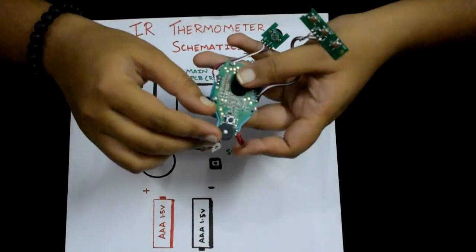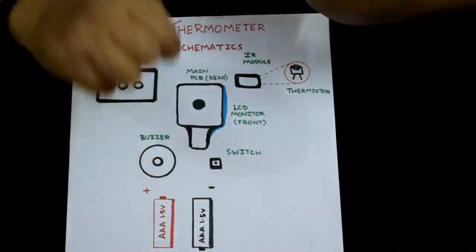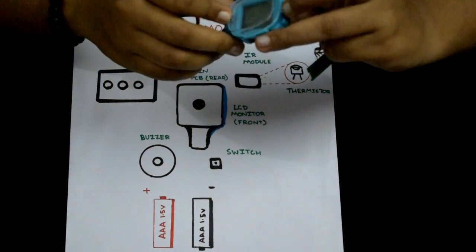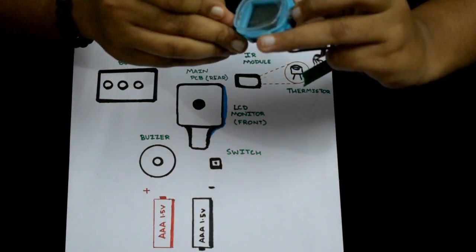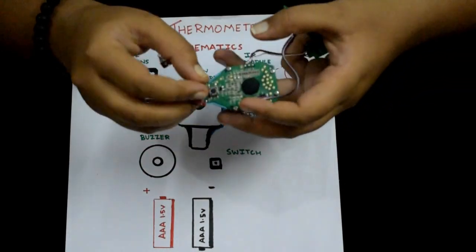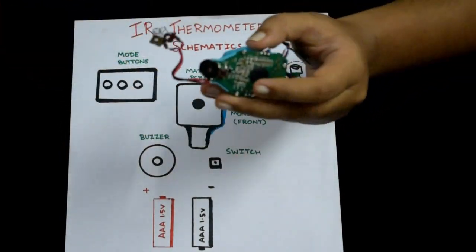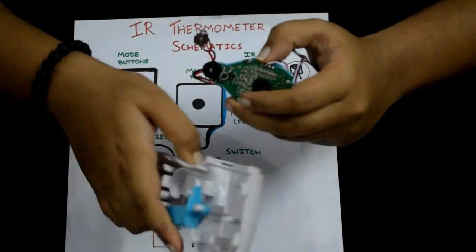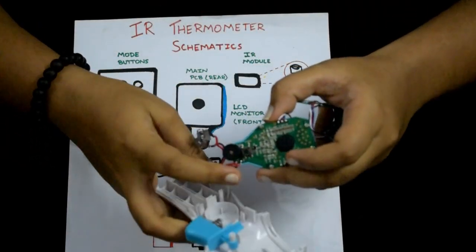This buzzer beeps when the machine is turned on and whenever you take a measurement. And there's this little push button switch here. When I trigger the gun here, it presses against this and the switch activates the PCB and the measurement is taken.